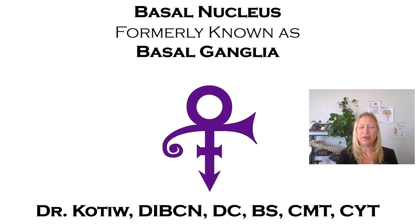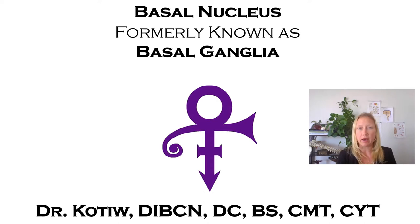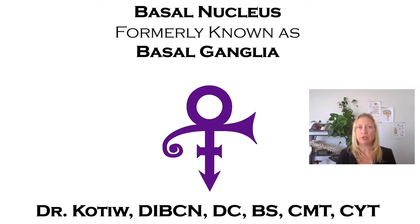Basal nucleus, formerly known as basal ganglia. We've changed the way that we name things based on whether it's the central nervous system or the peripheral nervous system. Cell bodies in the central nervous system are denoted using the term nucleus. Cell bodies in the peripheral nervous system are denoted using the word ganglia.